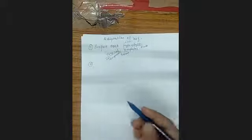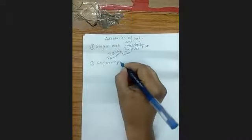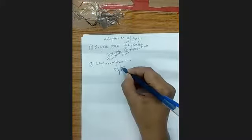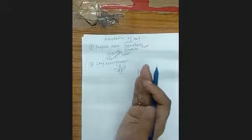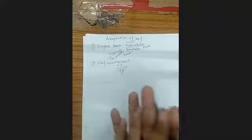The second adaptation is leaf arrangement — how the leaf is arranged. The leaf should be tilted and positioned on the upper surface of the plant, not facing downward. If it faces down, photosynthesis cannot take place easily. It should be at an angular section like this. So the arrangement of the leaf is very important.